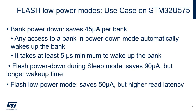The flash memory consumption can be reduced when the code is not executed from flash. After reset, both banks are in normal mode. In order to reduce power consumption, each bank can be independently put in power down mode by setting the PDREQ_X bit. Any access to a bank in power down mode automatically wakes up the bank. It takes at least 5 microseconds to wake up the bank. A powered-down bank saves 45 microamperes. Power down flash in sleep mode saves 90 microamperes. Activating the low-power read mode by setting the LPM bit in the flash access control register, Flash ACR, saves 50 microamperes at the expense of an increased latency.